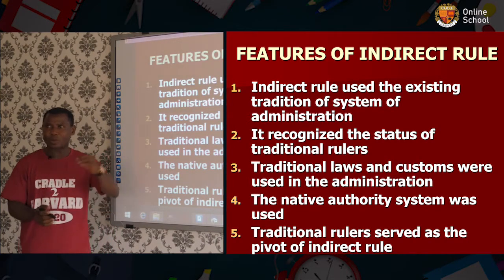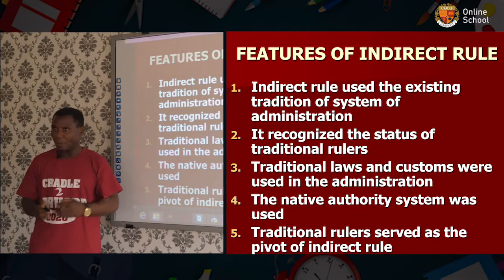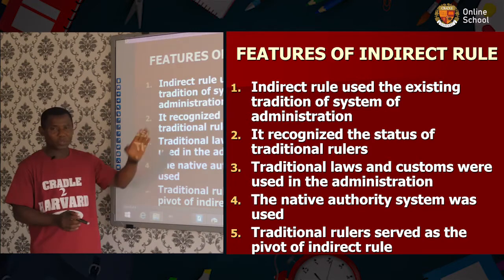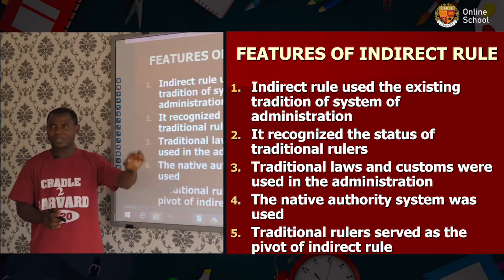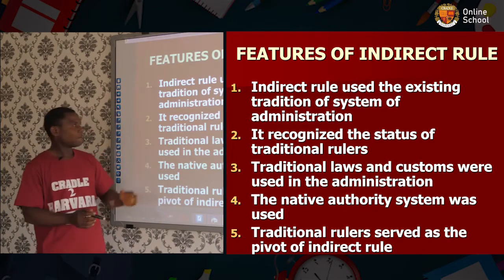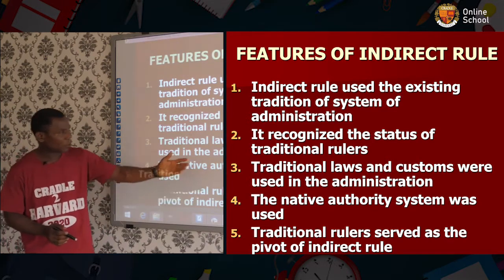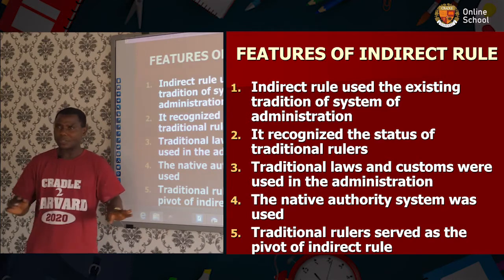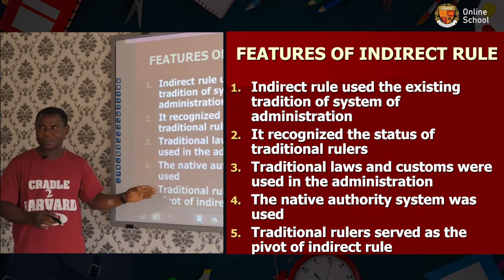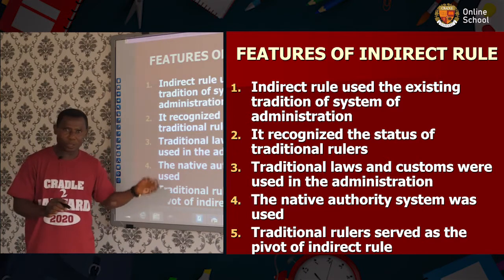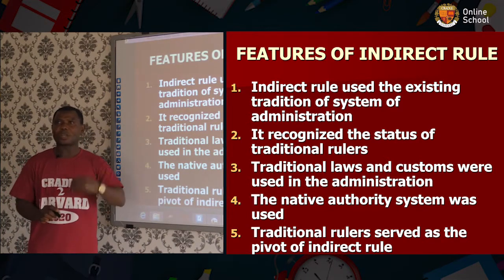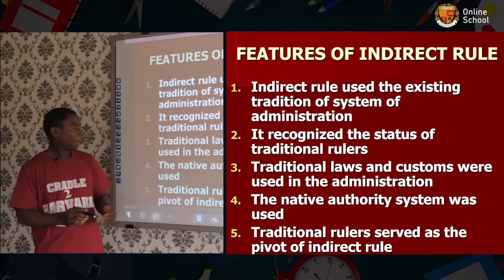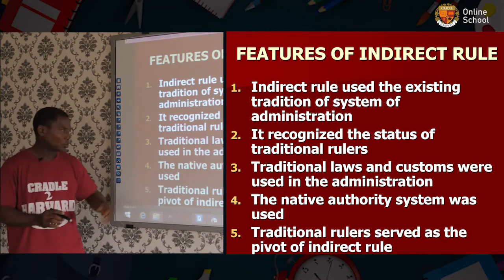They made use of traditional rulers and recognized their position. There are some forms of government that neglect traditional rulers, but when the British came they maintained the status and position of traditional rulers. Feature three: traditional laws and customs were used in the administration. All the rules and norms traditionally in place were used — they could not change the laws, the constitution, or the customs of the people. Feature four: the native authority system was also used.